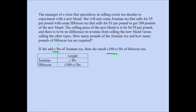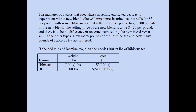In the table, jasmine tea has a weight of x pounds, and hibiscus tea has a weight of 100 minus x pounds, so the total weight of the blend is 100 pounds. Adding a cost column using numbers from our problem: x pounds of jasmine tea at $5 per pound gives a total cost of 5x. For hibiscus tea at $3 per pound, the total cost of 100 minus x pounds is 3 times (100 minus x). The total cost of the blend is therefore 5x plus 3 times (100 minus x).